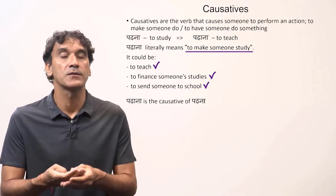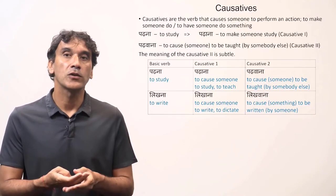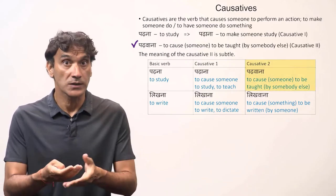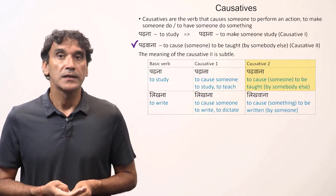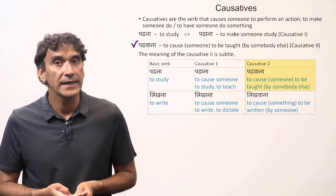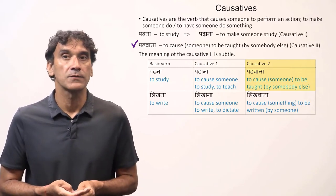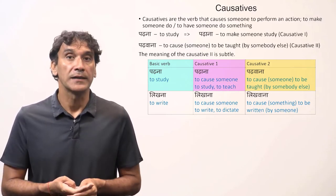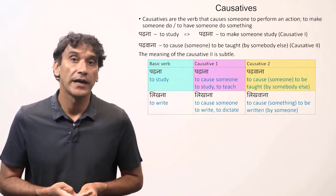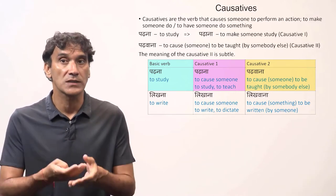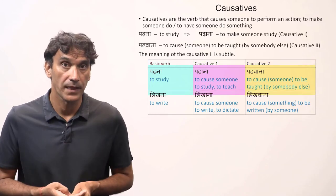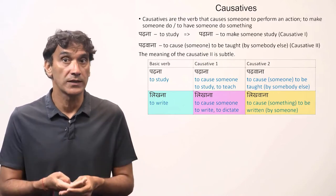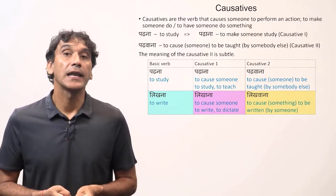Hindi also has the causative 2. Padhwana literally means to cause someone to be taught by somebody else. The meaning of causative 2 is subtle, but in many cases the difference between causative 1 and causative 2 is very clear. So padhna is to study, padhana is causative 1 meaning to cause someone to study or to teach, and padhwana is causative 2 meaning to cause someone to be taught by someone else. Similarly, likhna is to write, likhana is causative 1 meaning to cause someone to write or to dictate, and likhwana is causative 2 meaning to cause something to be written by someone.